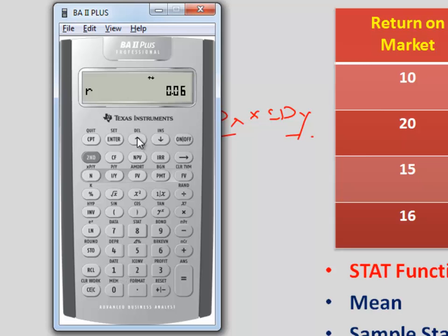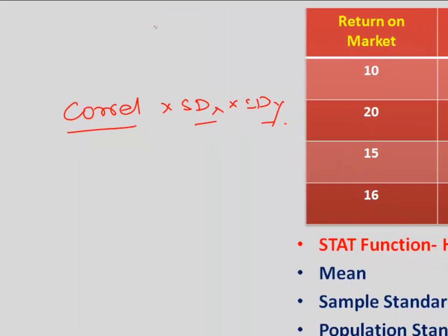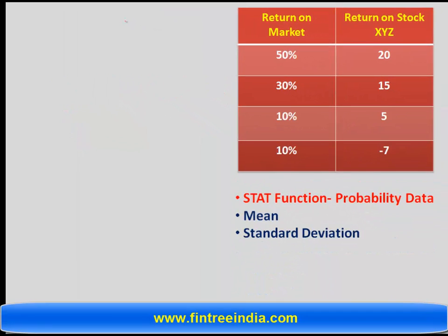so the correlation coefficient I'm going to store in the first memory slot the SX I'm going to store in the second memory slot and SY I'm going to store in the third memory slot and then we can simply calculate covariance by saying RCL 1 into RCL 2 into RCL 3 which in this case would be 2.17